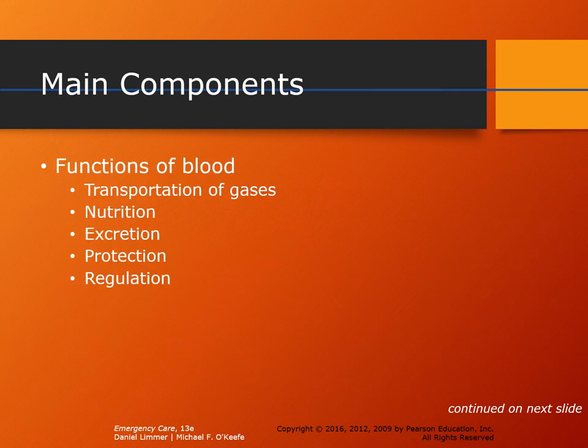The functions of blood have been discussed in other chapters, but it bears reminding what blood is actually there for. In addition to the four components — red blood cells, white blood cells, platelets, and plasma — blood assists with the transportation of gases, nutrition, excretion of toxins, protection, and regulation.